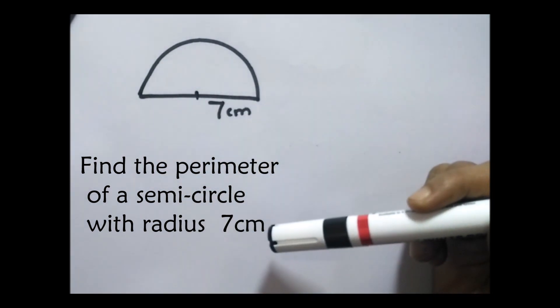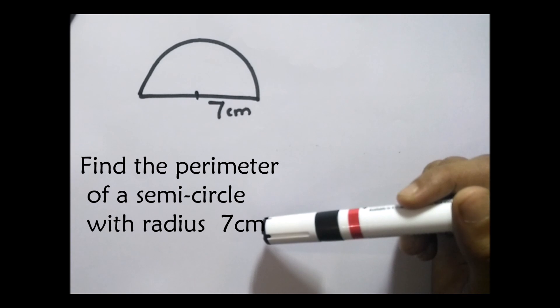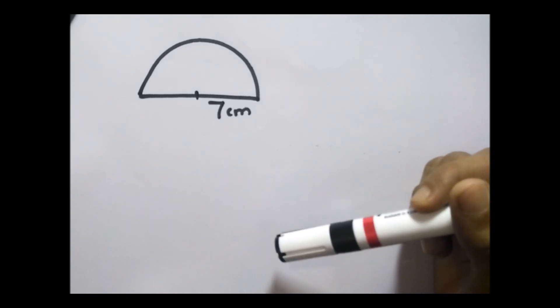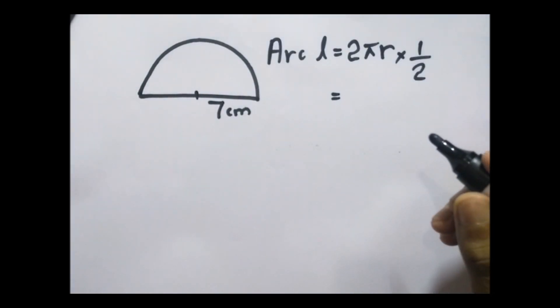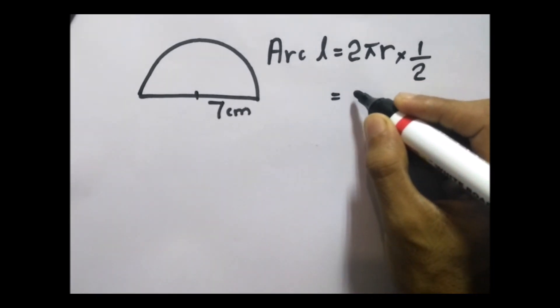How do we calculate the arc length? The formula is 2πr times, if it is a semicircle, then half. Now you can see the formula: 2πr times half.